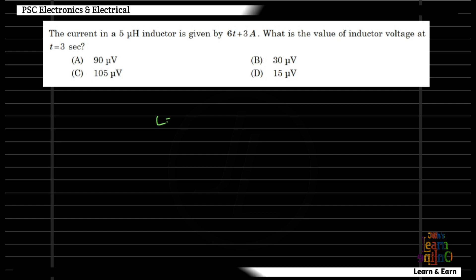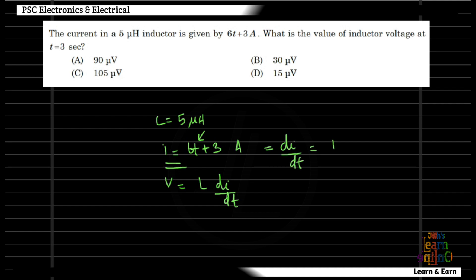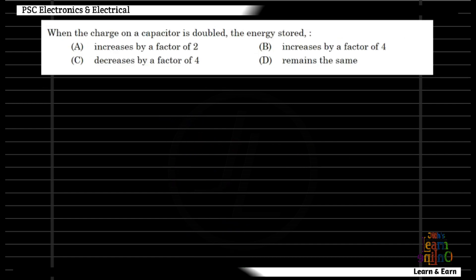Inductance value is 5 µH and current value is equal to 6t + 3 A. The inductor voltage is equal to L × dI/dt. Inductor voltage equals 6 × L × dI/dt = 5 µH. Inductor voltage is equal to 30 µV. The inductor voltage is equal to the constant state.